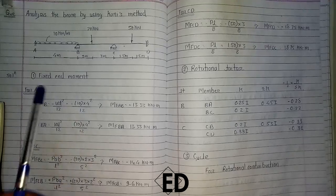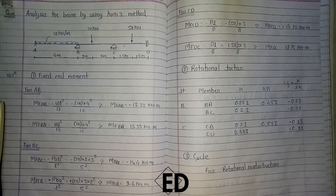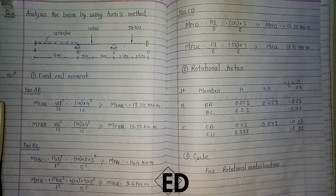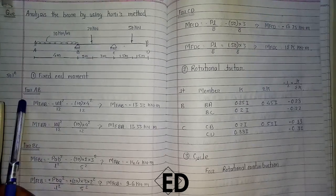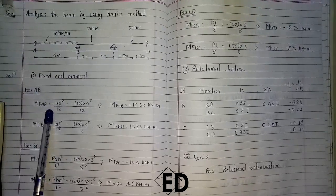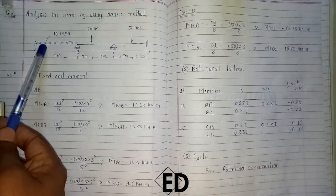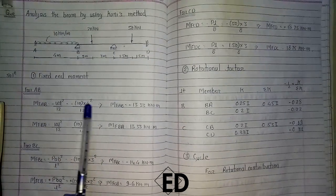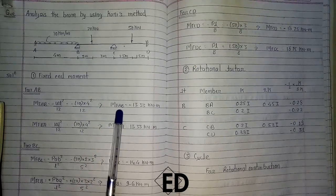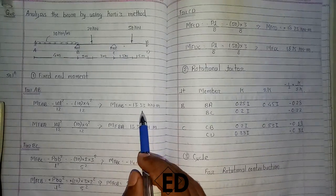The first step for solving this is the calculation of fixed end moments. First of all, you have to calculate all the fixed end moments for each span. For span AB, as we know, MFAB is WL²/12, that is W = 10 into L² by 12. Here we get the fixed end moment from A to B equals to minus 13.33 kNm.